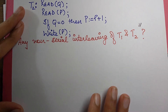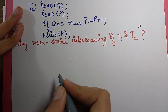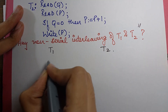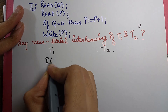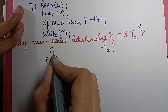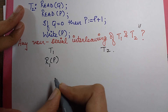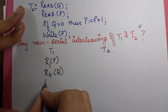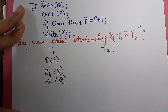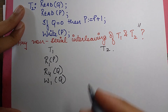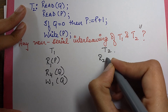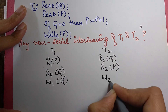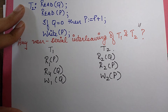Let us check — I'll just write these operations side by side and solve this question live. For T1 I have: R1P, R1Q, W1Q. And for T2 I have: R2Q, R2P, W2P.